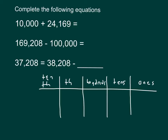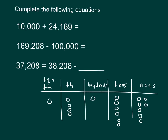Let's place our disks into the chart, starting by modeling 24,169. How many tens are there? Six. And how many ones? Nine — there are nine ones within that number. I actually need one more 10,000 disk, otherwise I would not have modeled my first number, 24,169, correctly.